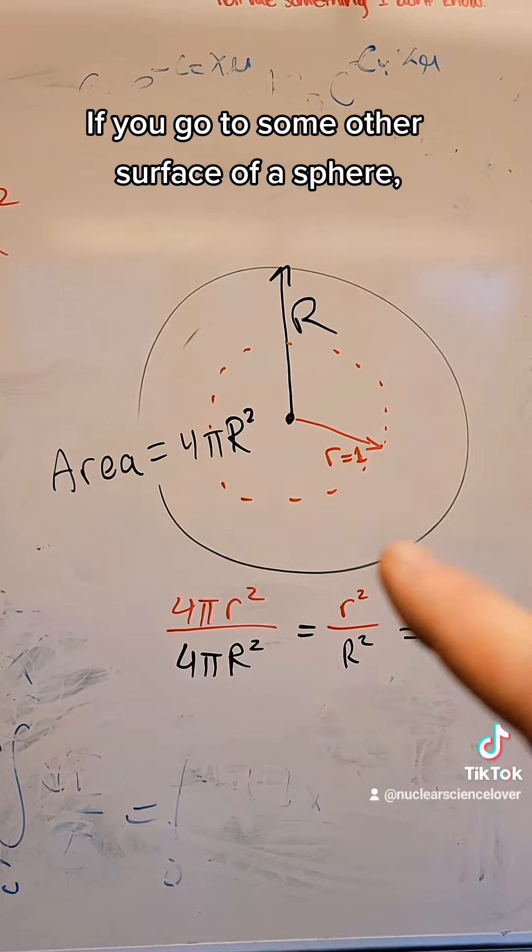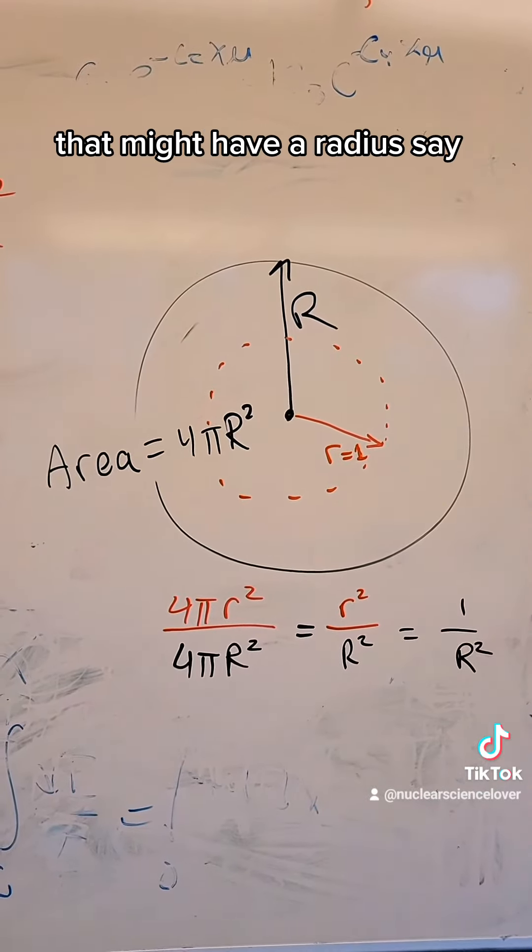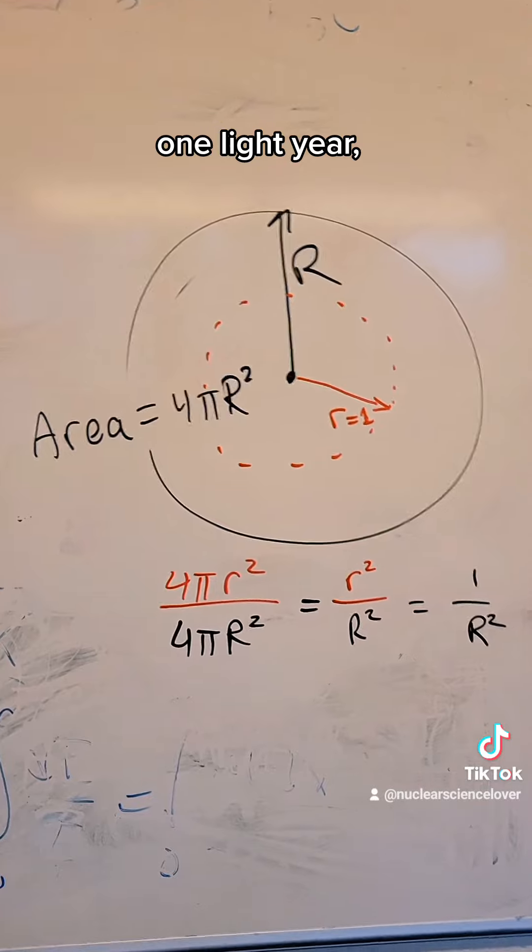If you go to some other surface of a sphere, say this inner one, the red, that might have a radius of 1—1 unit, 1 meter, 1 light year, 1 distance—